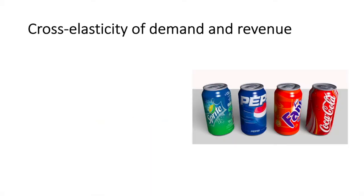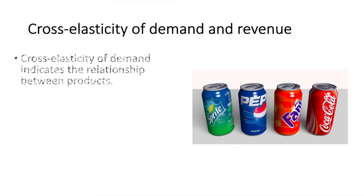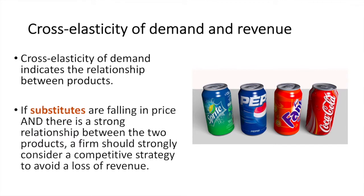Cross elasticity of demand helps because a firm can use its knowledge of substitutes and complements in developing competitive strategies. If substitutes are falling in price and there is a strong relationship between the two products, a firm should strongly consider a competitive strategy to avoid a loss of revenue. For example, if the price of Coca-Cola falls, then Pepsi should consider a strategy in response.